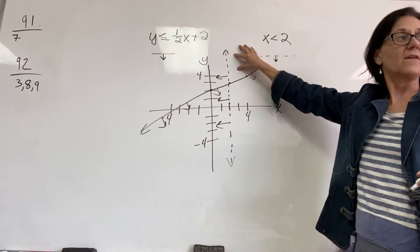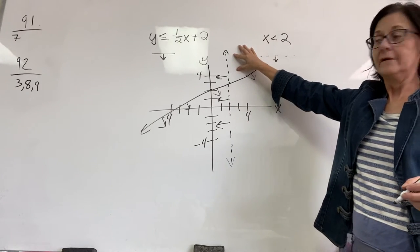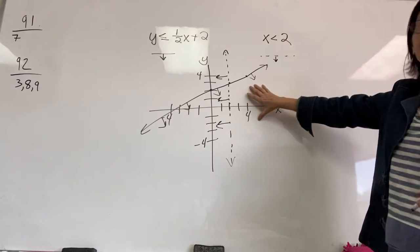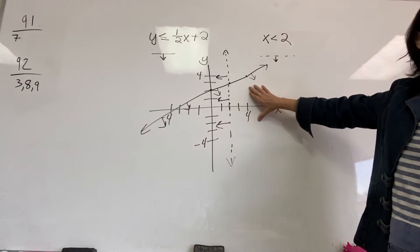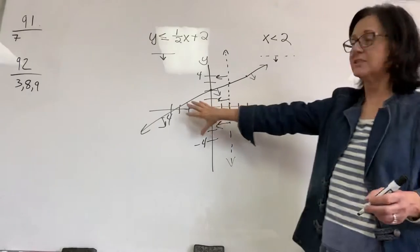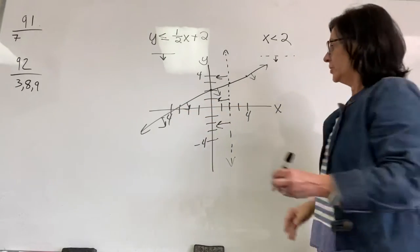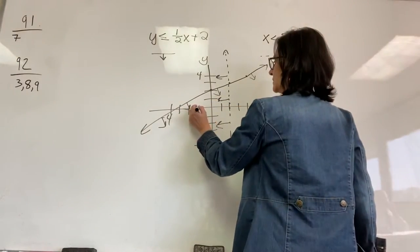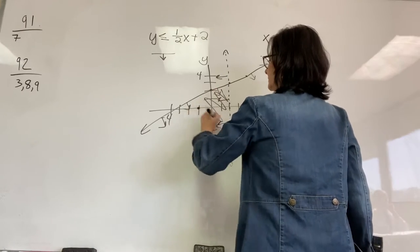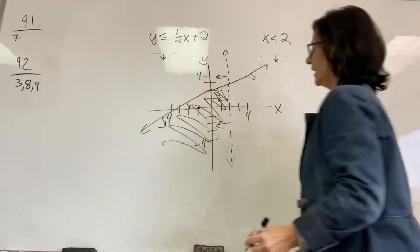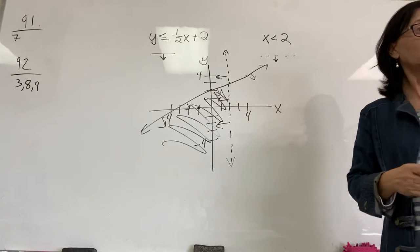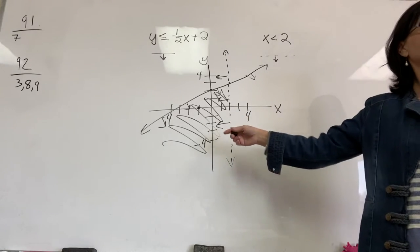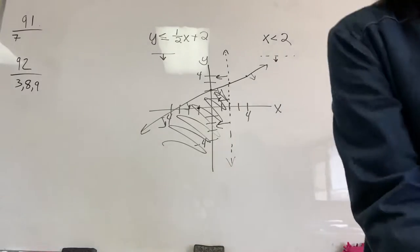This region only satisfies the X less than 2. This region satisfies neither of them. This region satisfies the Y less than or equal to 1 half, but not the X less than 2. This one satisfies both of them. You could choose any point, plug it in, and it would satisfy both of those inequalities. That's what I'm talking about, shading. Got it?